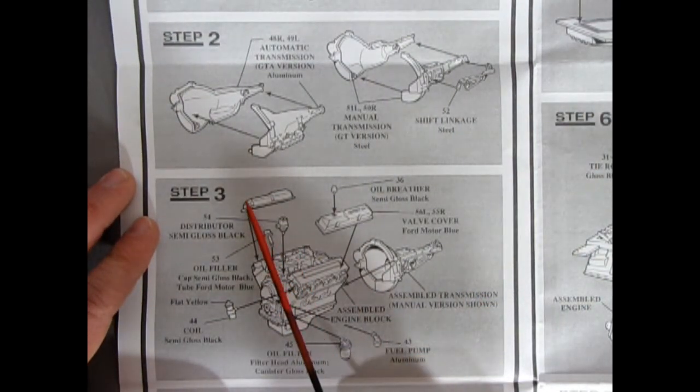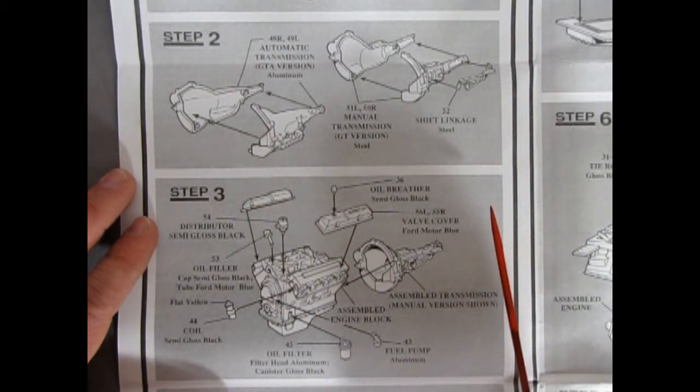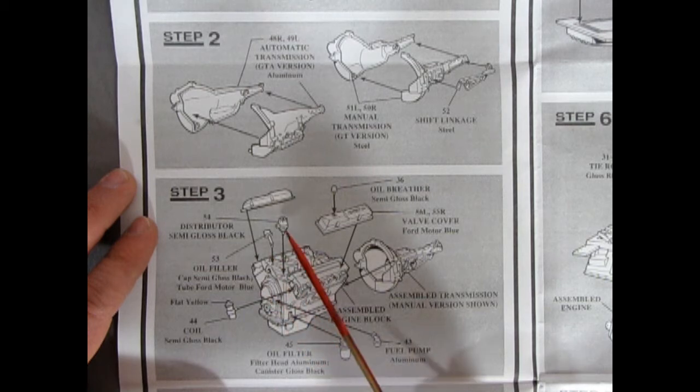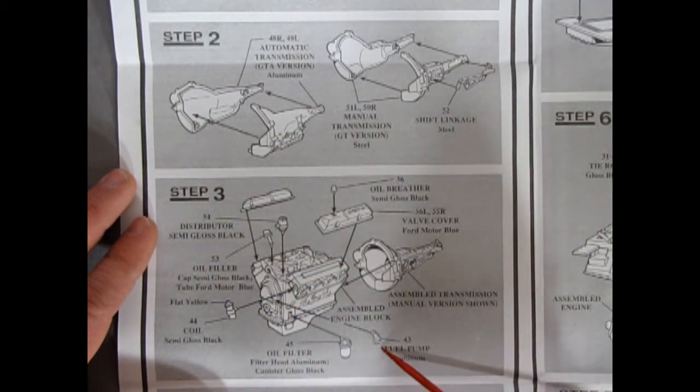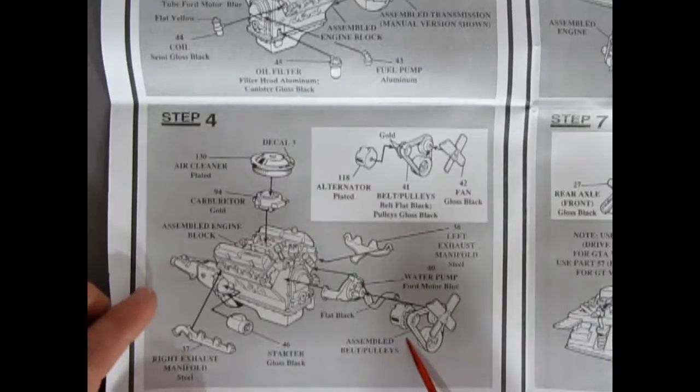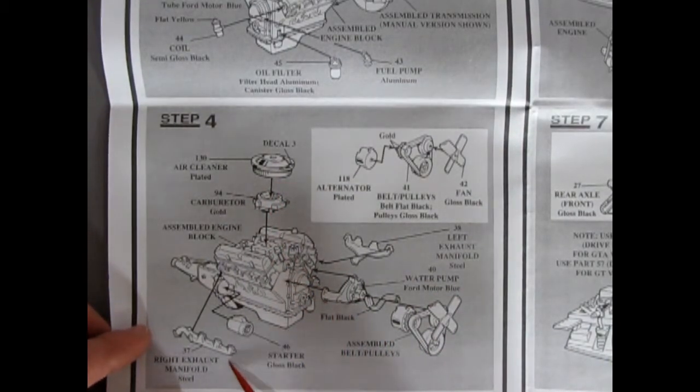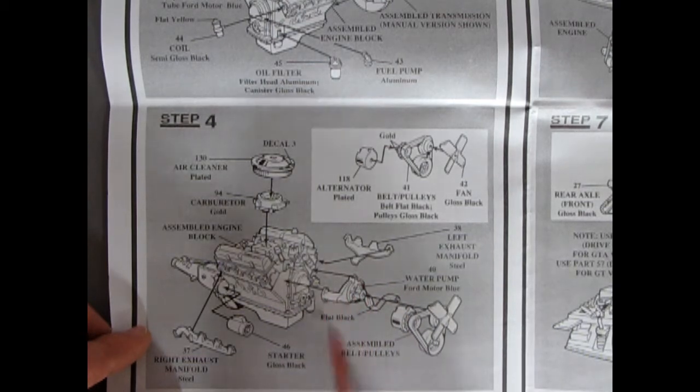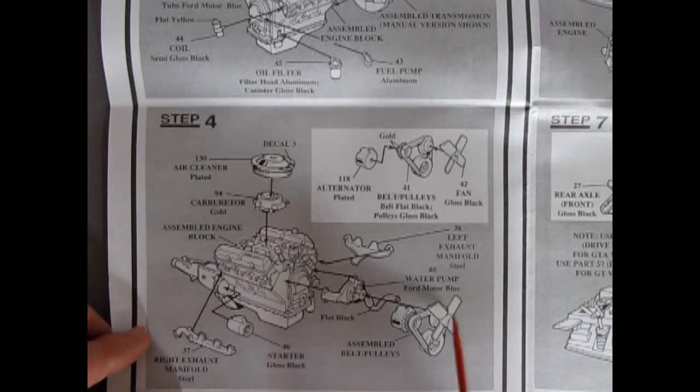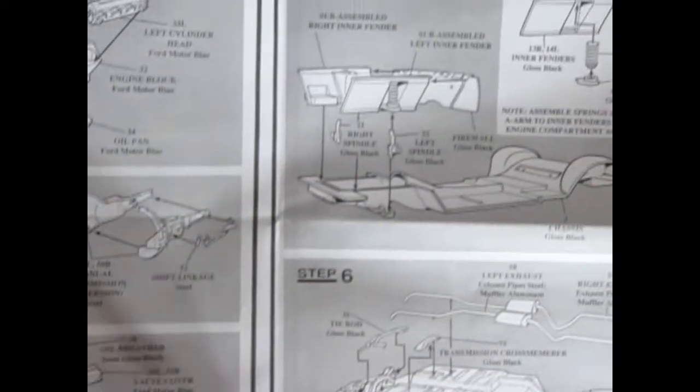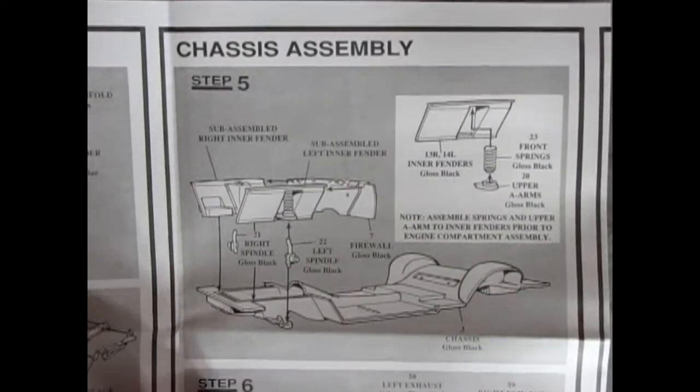In step three it shows the valve covers going on and these are also painted Ford Motor blue. You get your oil breather, your oil filler, your distributor, your coil, your oil filter and your fuel pump. And then your transmission of your choice gets glued on to the end of the engine block. And then in step number four that's where the air cleaner and your carburetor go on as well as your starter motor and your right and left hand exhaust manifolds as well as your water pump. And the water pump has a nice hose molded into it. Then you get your fan, your belt, some pulleys and your alternator as well. Alternators would have been fairly recent in this time period. Whereas before it would be generators.